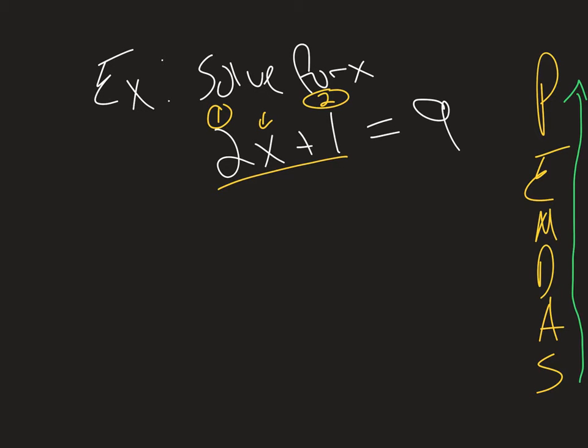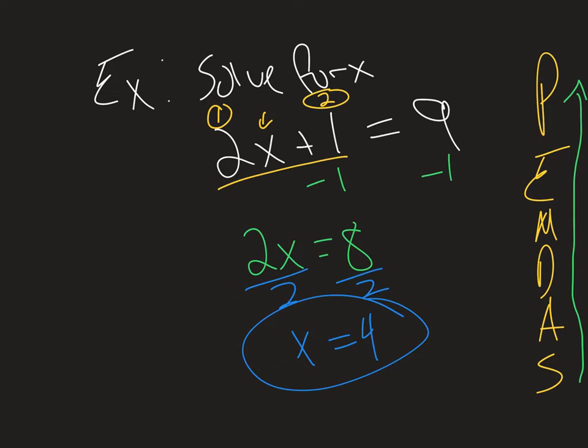So the first thing I'm going to do is undo the addition, so we're going to subtract 1 from both sides of the equation. So then 2x, just 2x, is going to equal 8. Now we can divide by 2, because that was the first thing we did technically to our x. So we'll divide both sides by 2, we can do that and maintain the equality, so x is going to be 4, and that would be the solution to our equation.